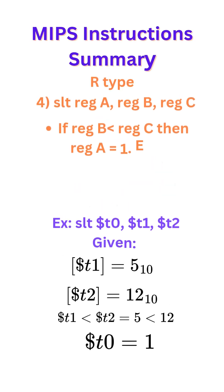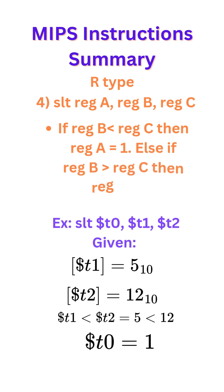Next our R-type is SLT — set less than. SLT register A, register B, register C. This instruction basically says if register B is less than register C, then register A would be equal to 1. Else if register B is greater than register C, then register A would equal 0.